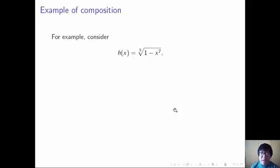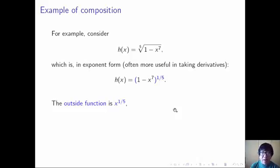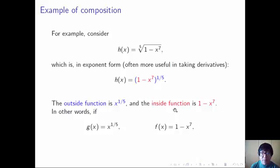So for an example, take h of x equals the fifth root of quantity 1 minus x to the 7. As often is the case, it's better to write this out in terms of exponents instead of roots, in which case you can write h of x as quantity 1 minus x to the 7, all to the 1/5 power. Here, the outside function is blah to the 1/5 — you can think of it as g of x equals x to the 1/5. And the inside function is 1 minus x to the seventh. If you let g of x equal x to the 1/5 and f of x equal 1 minus x to the seventh, then h of x equals g of f of x. You should think about why this is true for yourself.